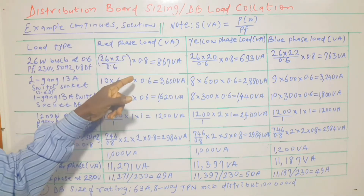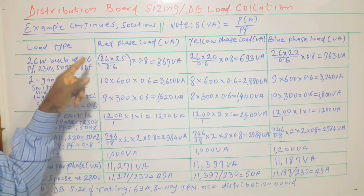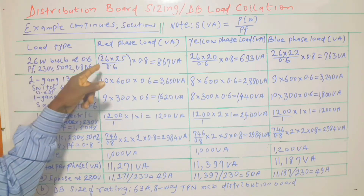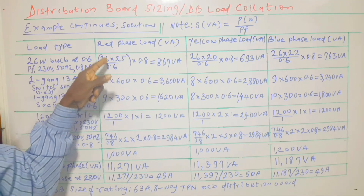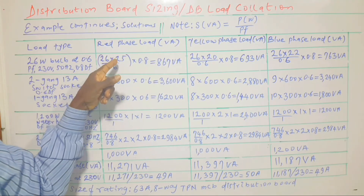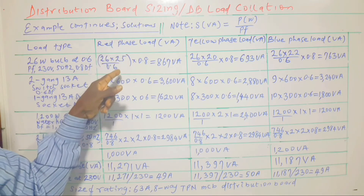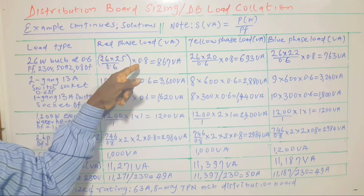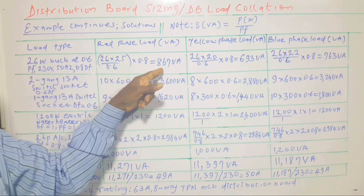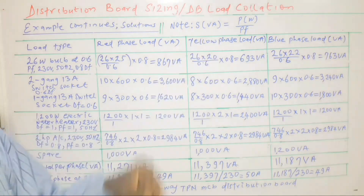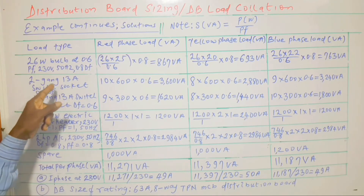On the red phase, we have 25 bulbs, each rated 26 watts. The important step is to convert 26 watts to VA by dividing by the power factor. That gives the VA rating, which is then multiplied by the number of bulbs on the red phase. We then multiply the result by 0.8, which is the diversity factor, to get the final value for the red phase bulbs.